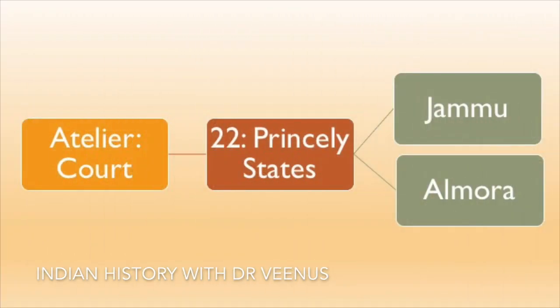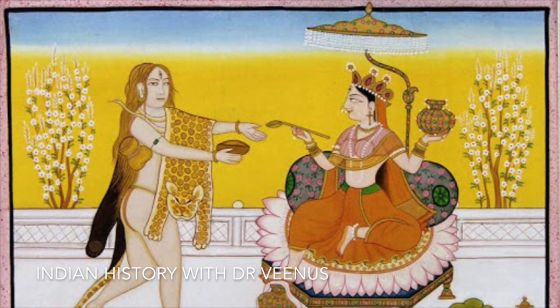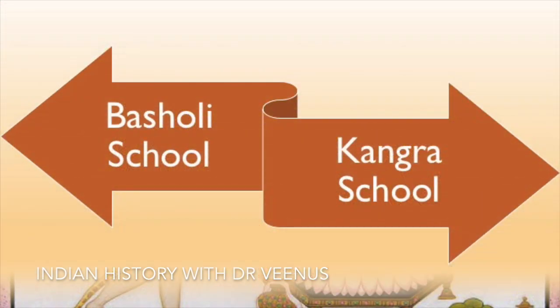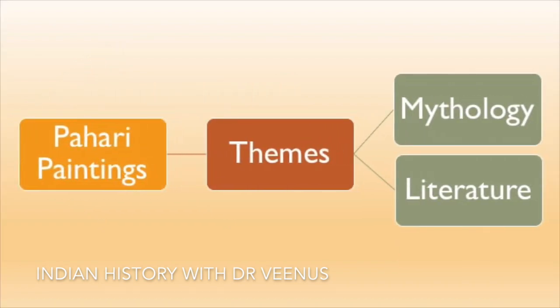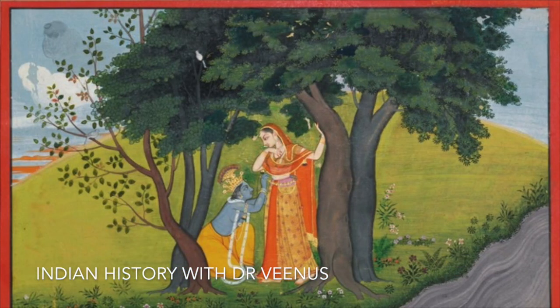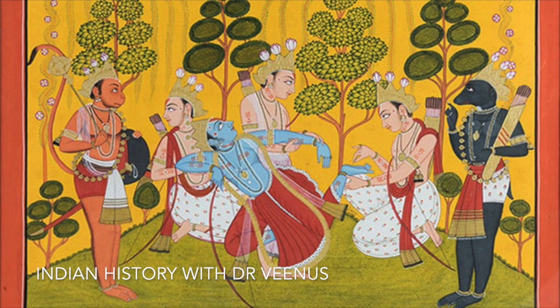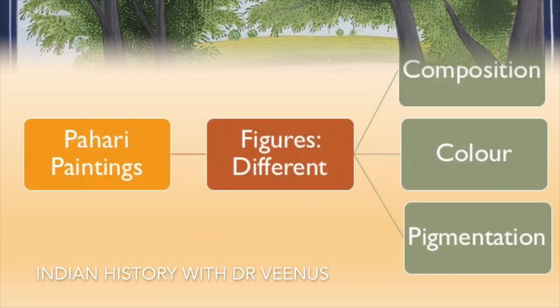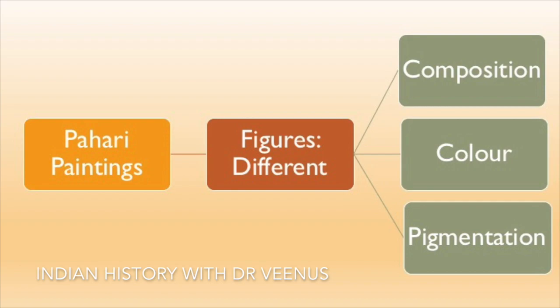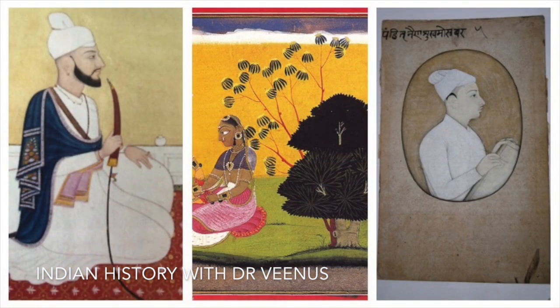There were many schools flourishing in smaller Rajput kingdoms which came under the blanket of Pahari paintings. These consisted of ateliers in the courts of around 22 princely states stretching from Jammu to Almora. The Pahari paintings can be grouped into two major groups: the Basholi school and the Kangra school. The themes ranged from mythology to literature, and a typical Pahari painting would bring several figures into the canvas, all full of movement. Each figure differs in composition, color and pigmentation. Three of the greatest painters of this school were Nainsukh, Manakko and Sansarchan.